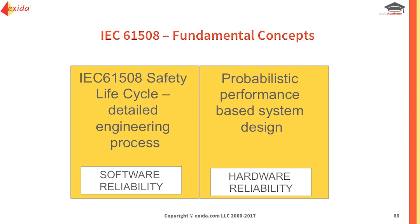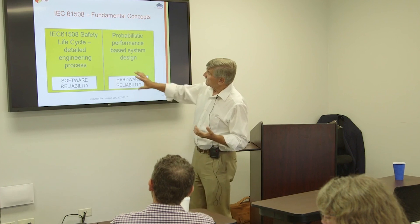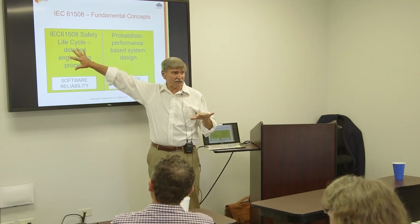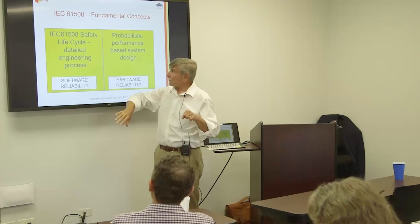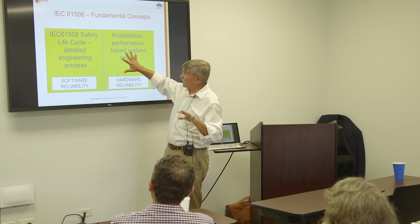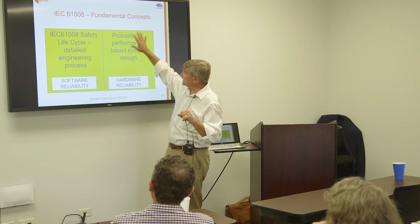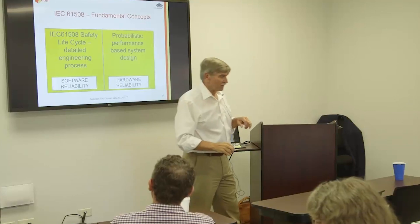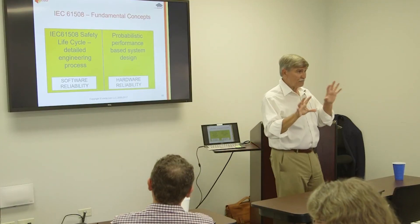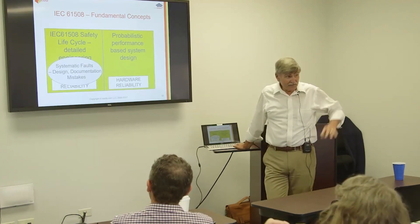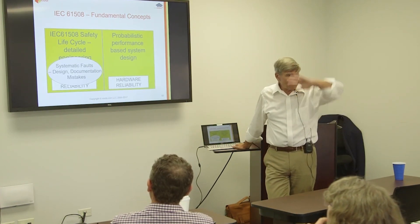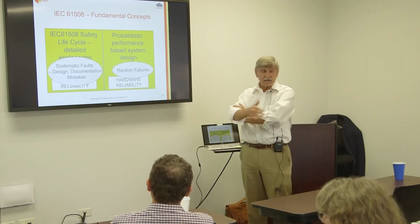Make it work right, or know exactly how it's going to fail and try to make it fail in a safe way. We do that by setting up detailed engineering processes — primarily software processes — and evaluate all the hardware based on probability of failure. So there are two fundamental concepts: they're meant to take care of systematic failures, including design, documentation, and faults, and random failures.